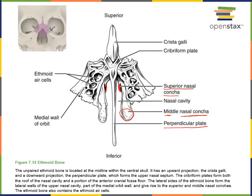On the superior surface of the ethmoid bone, forming the floor of the cranium, there is a cribriform plate. The cribriform plate contains many small foramina — the cribriform foramina — which are small openings through the bone that contain the olfactory nerve, a cranial nerve carrying the sense of smell. Rising above the cribriform plate is a projection of bone known as the crista galli, which serves as a point of attachment for the meninges to stabilize the brain.